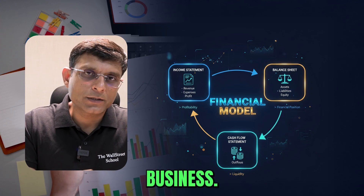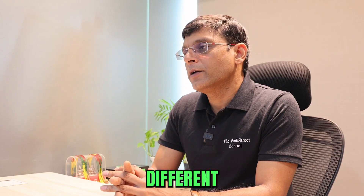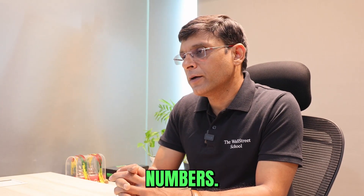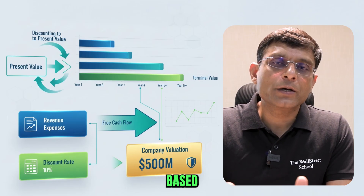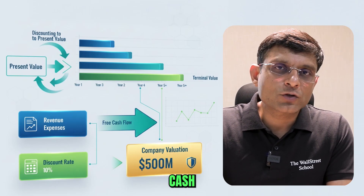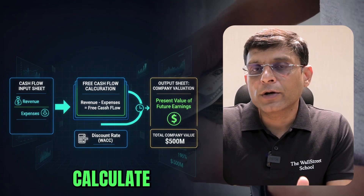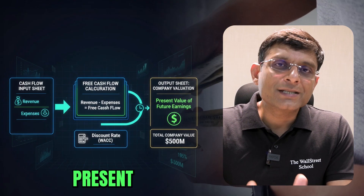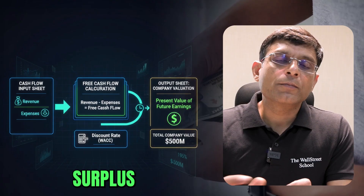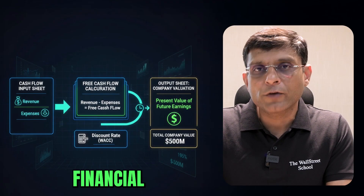After creating the three-statement model, you can run different valuations on these projected numbers. For example, you can do a DCF valuation based on projected cash flows — link the cash flows to your output sheet and calculate the discount rate to find the present value of free cash flows the business will earn in the future.